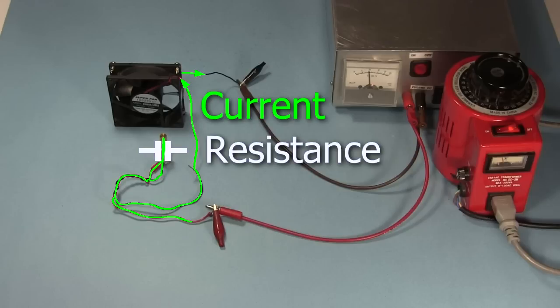The fan needs a certain amount of electrical current going through it in order to spin. But the higher the resistance in the thermistor, the lower the current is going through the fan. And the resistance of the thermistor is high enough to make that current too low.